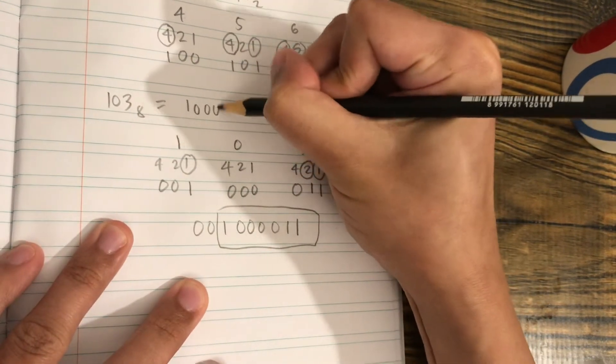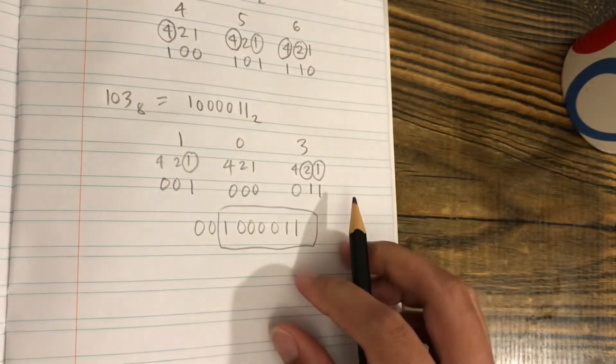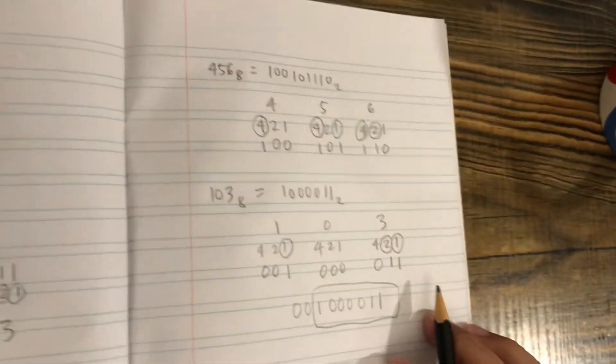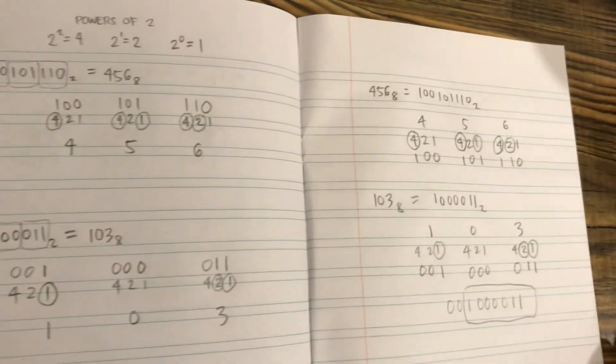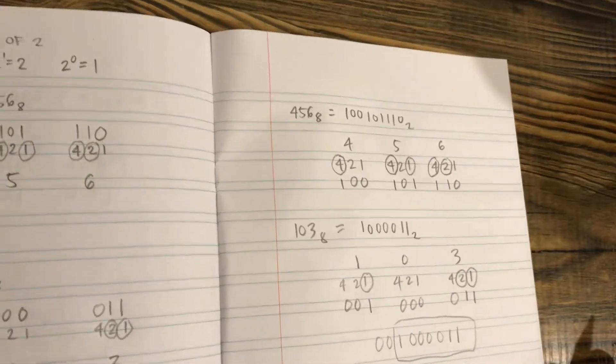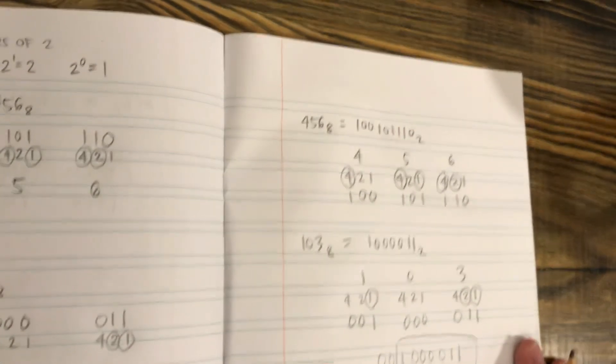1000011. That is how we convert binary numbers to octal and octal to binary. If you learned something new, please like, share, and subscribe. Bye!